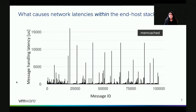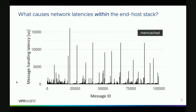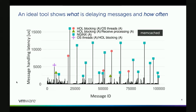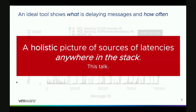We started this work with a question: what causes network latencies within the end-host stack? I'm showing you a measurement of memcached message handling latencies within our system. The x-axis shows the hundred thousand messages we profiled in order. The y-axis shows the message handling latencies. As you'd expect, most memcached messages don't take very long to process — only a few microseconds. But quite a few messages take several milliseconds to process. We wanted to find out why it was taking so long to process these messages. An ideal tool would tell us exactly where those latencies were coming from for each message and give us a holistic picture of the source of latency anywhere in the stack.